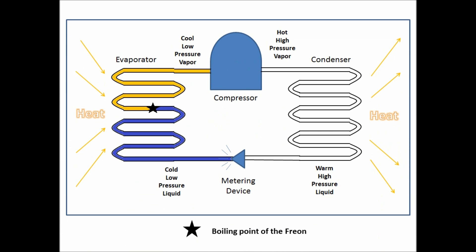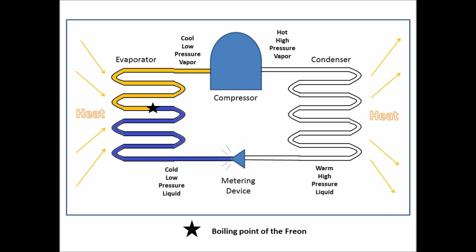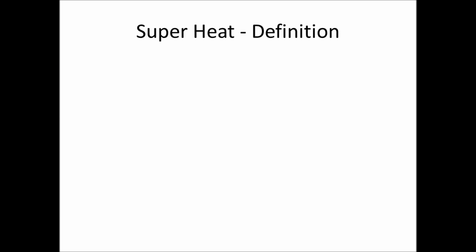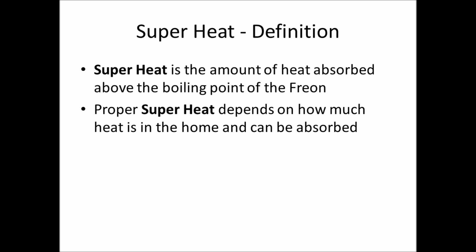On the evaporator side of the refrigeration cycle, the freon enters the evaporator coil — represented here in blue as a liquid freon. At the star point it boils, and the orange represents the vapor of the freon. Superheat is the amount of heat absorbed above the boiling point of the freon — so that's after the star point.